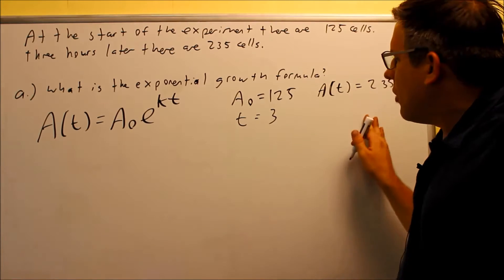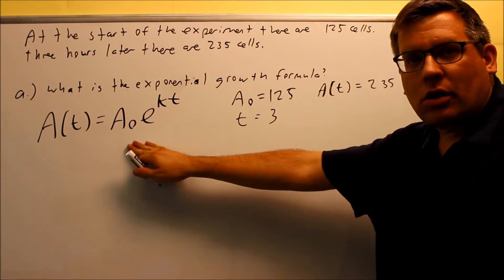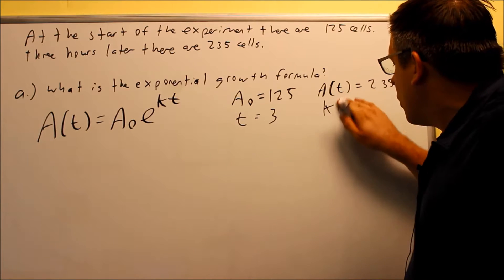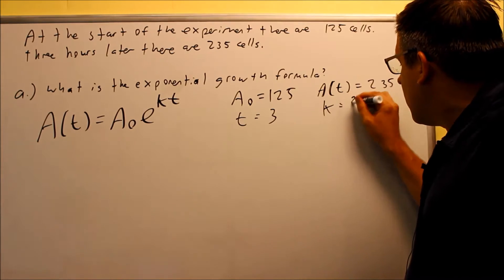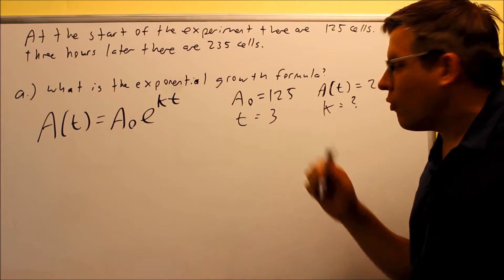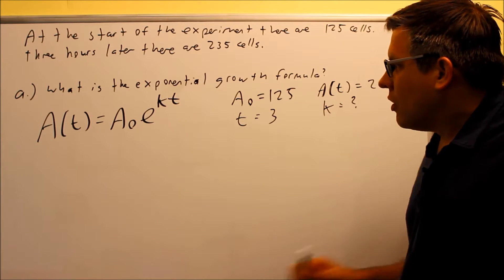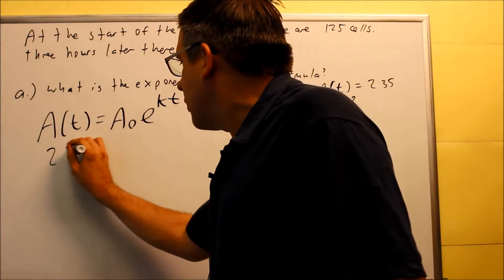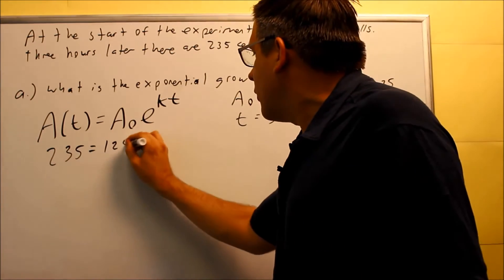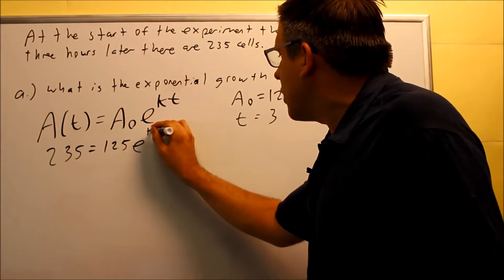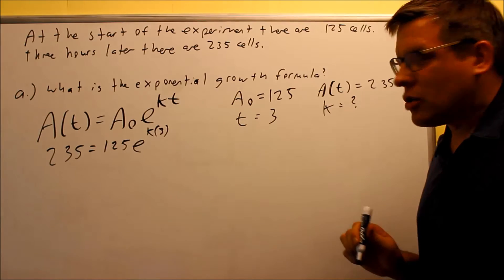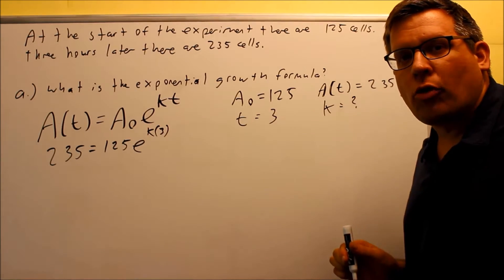Okay, so now that we have this information, we want to put it in here. And the last thing we're going to solve for is k. K is the only thing that we don't know because that wasn't provided. We do need to find the k value in order to get the growth formula that's specific for this particular example. So A(t), that's 235. A₀ is 125. K is what we're trying to solve for. And then I have a 3. That would be my t.